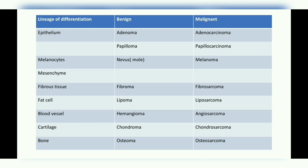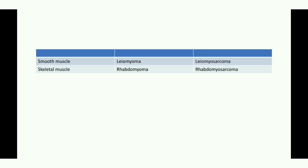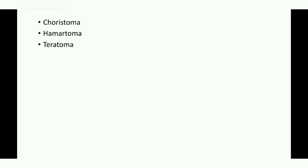A benign tumor of bone is an osteoma and the malignant tumor of bone is an osteosarcoma. In case of smooth muscle, the benign tumor is a leiomyoma and the malignant tumor is a leiomyosarcoma. For skeletal muscle, the benign tumor is a rhabdomyoma and the malignant tumor is a rhabdomyosarcoma.